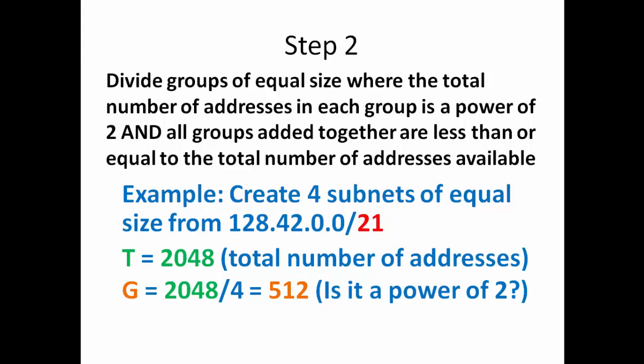First we need to say, is 512 a power of 2? In this case, yes it is. Our next thing says, is it less than or equal to our total number of addresses, which is 2,048? It divides in evenly, so it is equal to it. We can use this. So we now have four groups of 512 addresses.